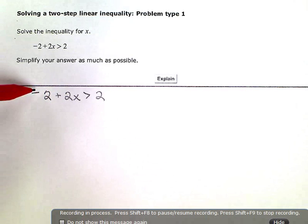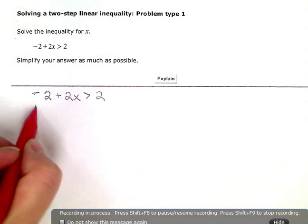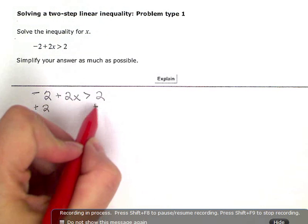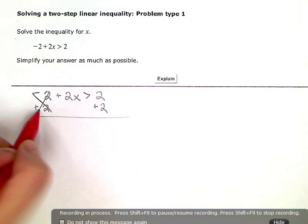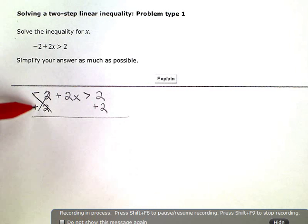The opposite of negative 2 is positive 2, so I'm going to add 2 to both sides to eliminate or zero out the constant term on this side.